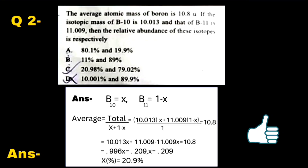Question 2: If the isotopic masses of B-10 is 10.013 and B-11 is 11.009, then the relative abundance of these isotopes respectively is: Option A: 80.1% and 19.9%, Option B: 11% and 89%, Option C: 20.98% and 79.02%, Option D: 10.001% and 89%. The average atomic mass of boron is 10.8 u. We let the abundance of B-10 be x, so B-11 will be (1−x).